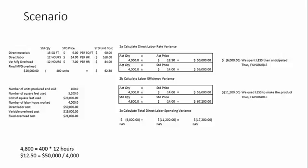To calculate the total direct labor spending variance, we add those together. We have a $6,000 favorable direct labor rate variance and an $11,200 favorable labor efficiency variance, which gives us a total direct labor variance of $17,200 favorable.